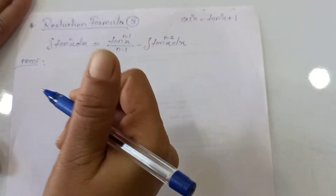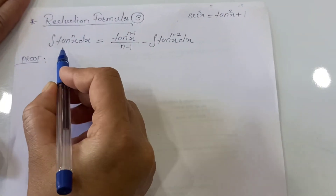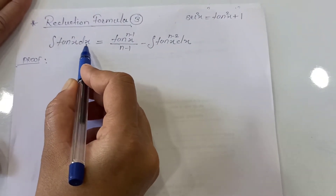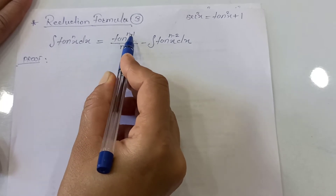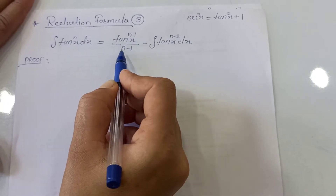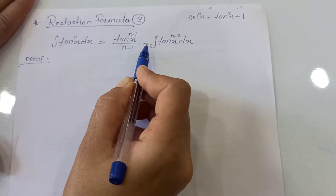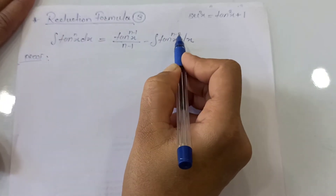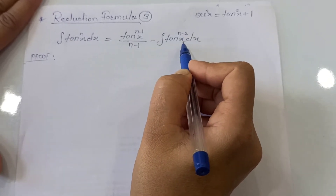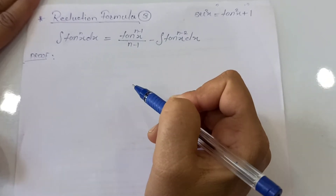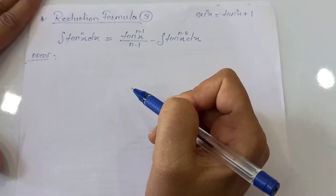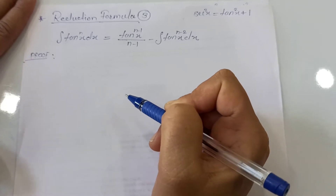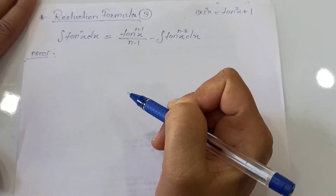Reduction formula 3 is basically: the integration of tan raised to n times x dx equals tan raised to n minus 1 times x upon n minus 1, minus the integration of tan raised to n minus 2 times x dx. Let's prove this formula first and after this we will take one example based on formula 3.